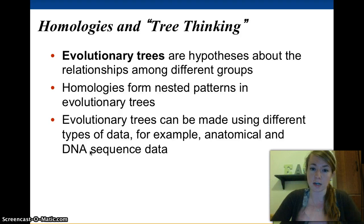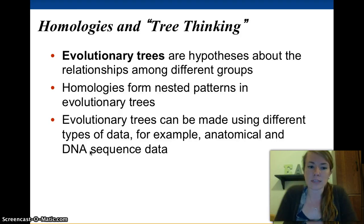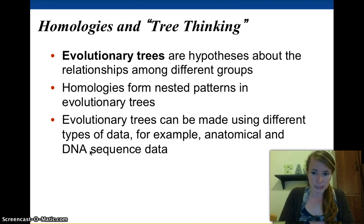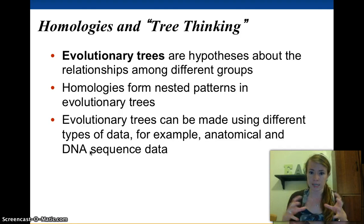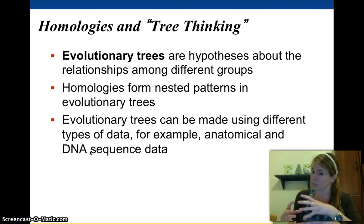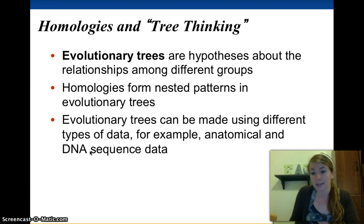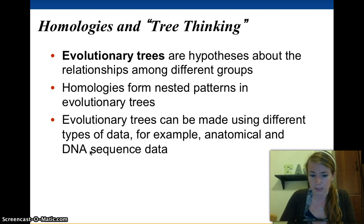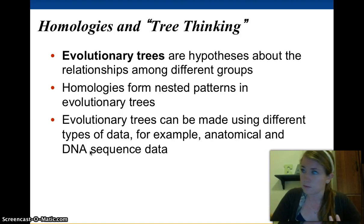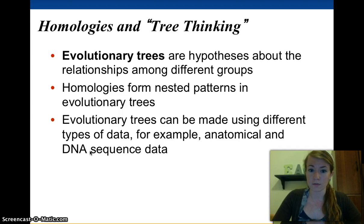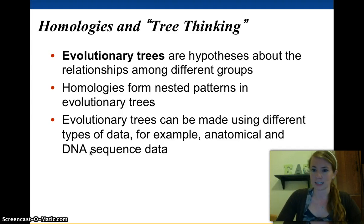Evolutionary trees are hypotheses about relationships among different groups. When we think about how different living things have descended from each other or shared a common ancestor, we can put this into a tree to visualize it. We can see that homologies form nested patterns — groups of animals that appear to be descended from a common ancestor are going to have homologous structures because they came from the same living thing. We can make different kinds of evolutionary trees from DNA data or physical appearance, though physical appearance is not always really correct.